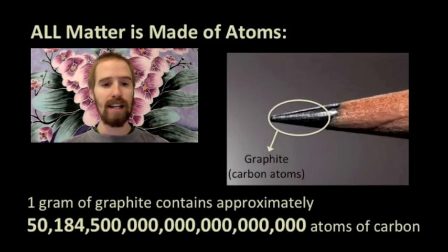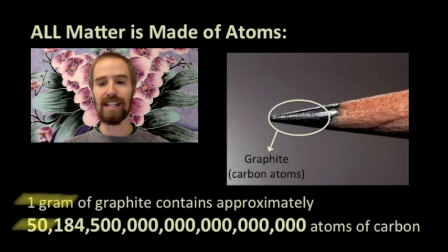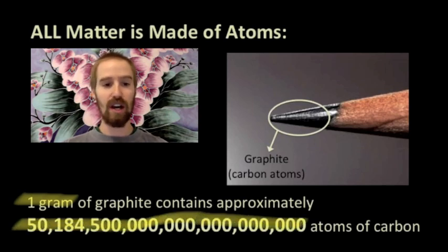Atoms are small. Take the tip of your pencil, for example. The stuff we call lead is actually a substance called graphite, and graphite is pure carbon, meaning it's made exclusively of carbon atoms. Let's say the tip of your pencil, if we were to break it off, has a mass of about 1 gram all on its own. That 1 gram of graphite contains over 50 sextillion atoms. That's over 50 billion sets of 1 trillion atoms each. That's a lot of atoms, and remember, that's in only 1 gram of graphite.